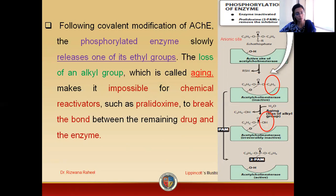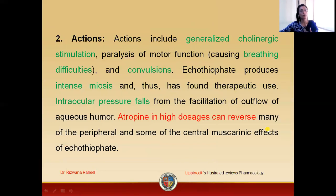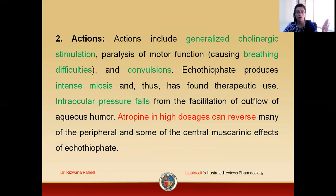Aging makes it impossible for chemical reactivators like pralidoxime to break the bond and detach the ecothiopate from the enzyme. The actions of ecothiopate: ecothiopate is basically a drug that can stimulate cholinergic effects. These effects include breathing difficulties, convulsions, miosis, and fall in blood pressure. The effects of the drug can be overcome by using an anticholinergic agent, that is atropine.